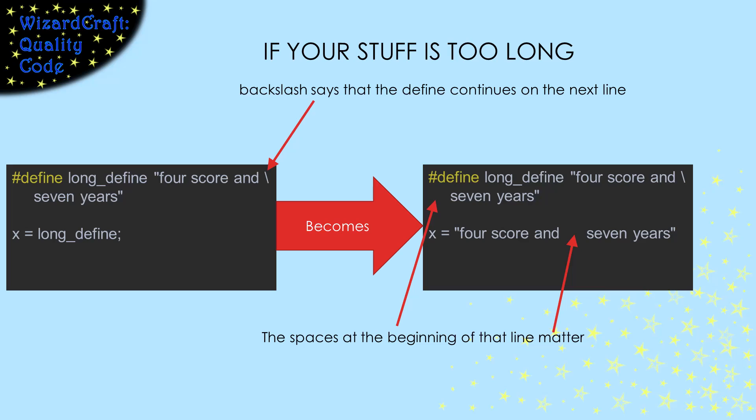If your replacement string is really long, you can continue it on the following line. Just put a backslash at the end of the line where you want to continue. The preprocessor will not include the backslash or the carriage return in the replacement string it uses. In this case, I put some spaces to indent the second line. Those will be included in the replacement string.